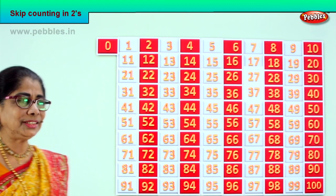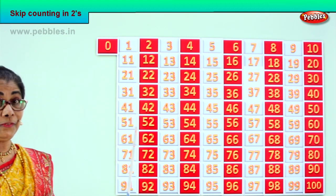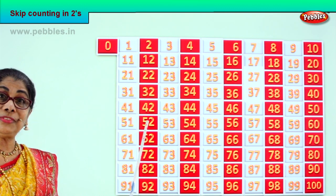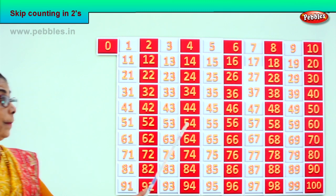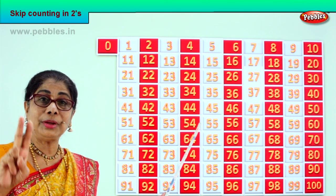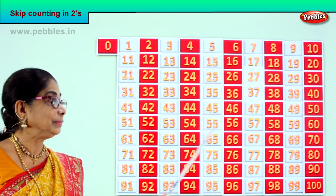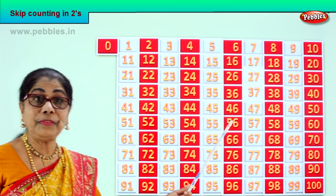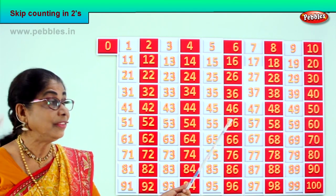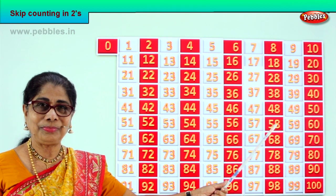Good. Let's go on. After fifty: fifty-one, fifty-two. After fifty-two: fifty-three, fifty-four. After fifty-four: fifty-five, fifty-six. After fifty-six: fifty-seven, fifty-eight. After fifty-eight: fifty-nine, sixty.